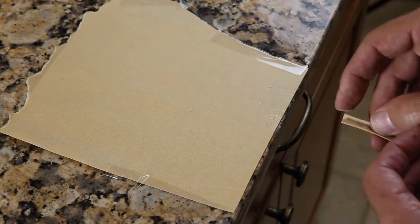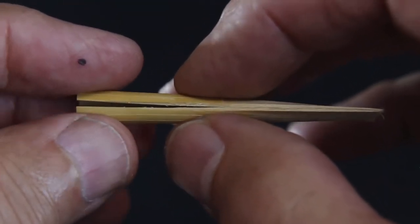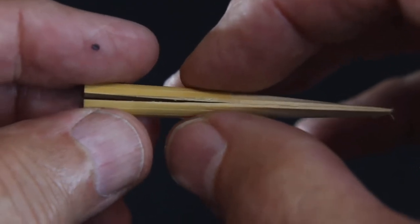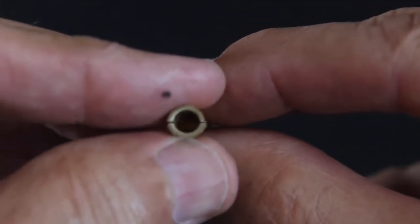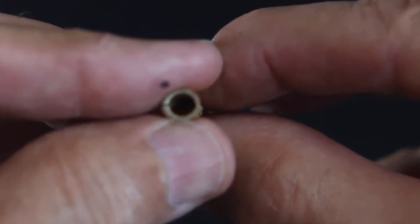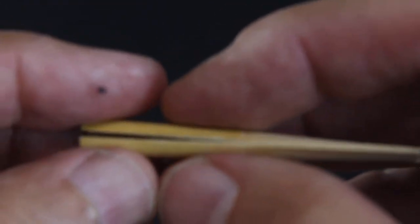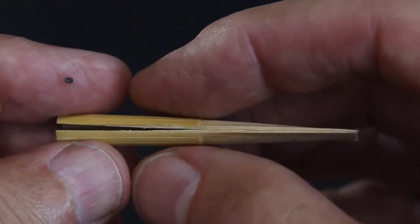So why do we bevel? There's two reasons. One is to create a better seal on the end. There's more surface area meeting when the two semicircles meet and there's a better seal there.